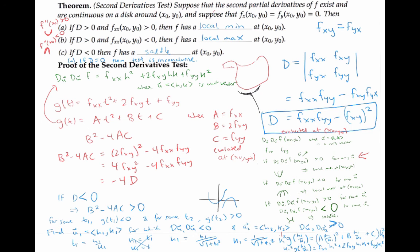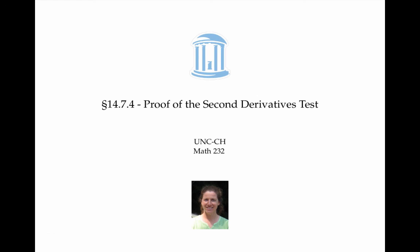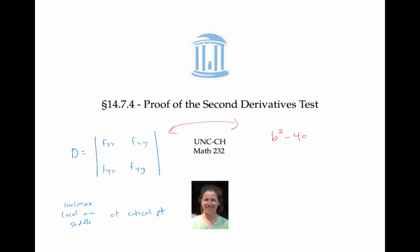In this video we proved the second derivatives test, which tells us how the discriminant helps discriminate between whether we have a local max, a local min, or a saddle at a critical point. The really cool thing about the proof is that the discriminant D is actually related to the discriminant for quadratic equations that tells us how many zeros a parabola has.